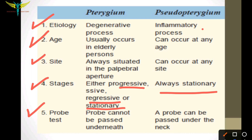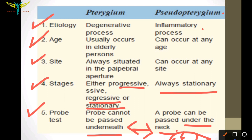The probe test can differentiate pterygium from pseudo pterygium. In cases of pterygium, the probe cannot be passed underneath the pterygium because the whole layer is fixed to the conjunctiva and the cornea. In cases of pseudo pterygium, the probe can be passed under the neck of the pseudo pterygium because the adhesions are only noted at the margin of the cornea and the bulbar conjunctiva.